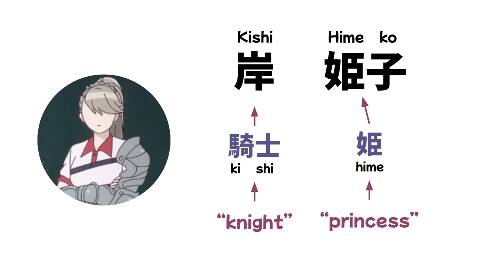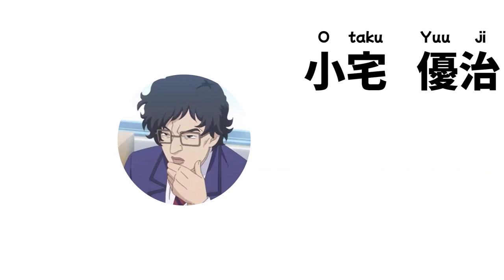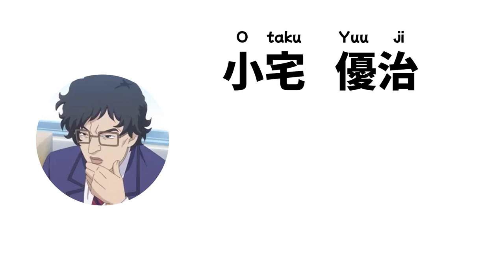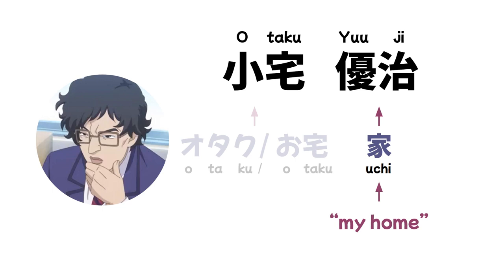This group of three guys have even less screen time than the previous group. First up, Otaku Yuji — he looks like an otaku but apparently is not. As for his given name Yuji, the kanji characters can also be read as 'Uchi,' meaning 'my home.' The word 'Otaku' can also mean 'your home,' so: my home, your home.